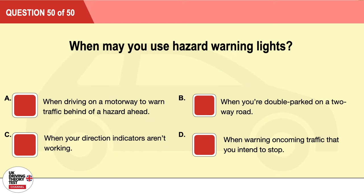Question 50: When may you use hazard warning lights? A: When driving on a motorway to warn traffic behind of a hazard ahead. B: When you're double parked on a two-way road. C: When your direction indicators aren't working. D: When warning oncoming traffic that you intend to stop. The correct answer is A: when driving on a motorway to warn traffic behind of a hazard ahead.